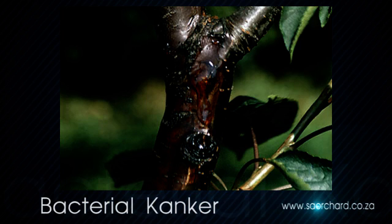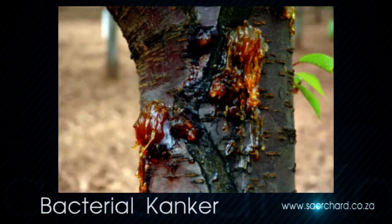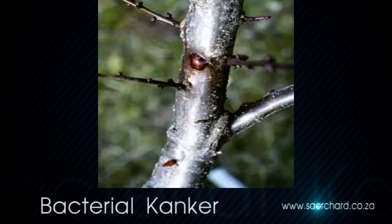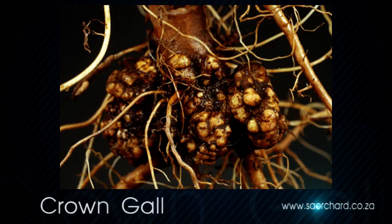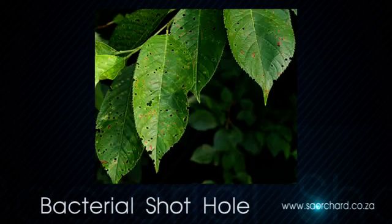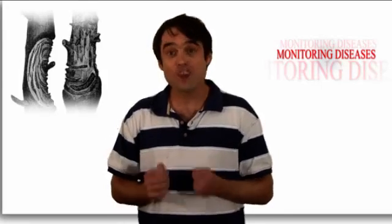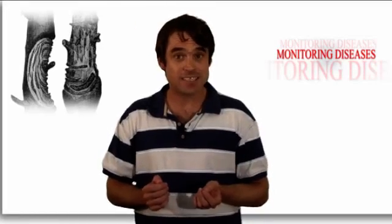There are a few bacterial diseases that affect fruit trees. Apricots, plums and peaches are more susceptible to bacterial diseases than any other fruit types. Bacterial diseases can only be treated using antibiotics, which is illegal in most parts of the world. So the only way to prevent them is to build up the immune system in the tree by feeding and watering it well. Building up the tree's immune system will make it stronger and able to resist these bacterial diseases.